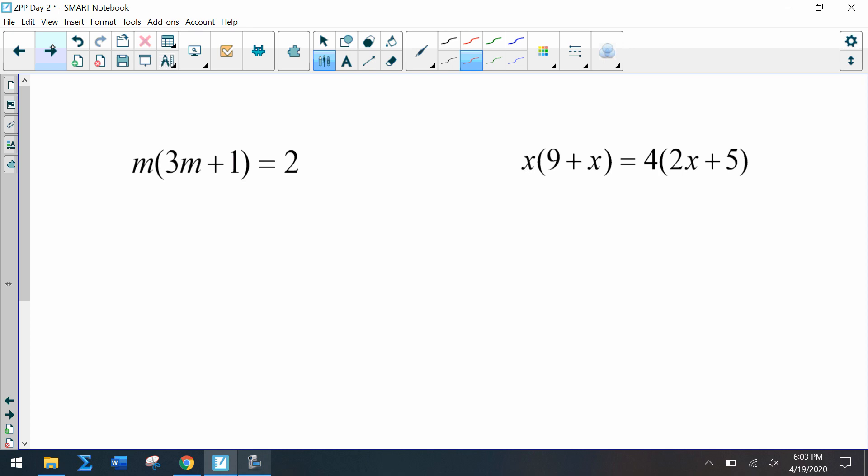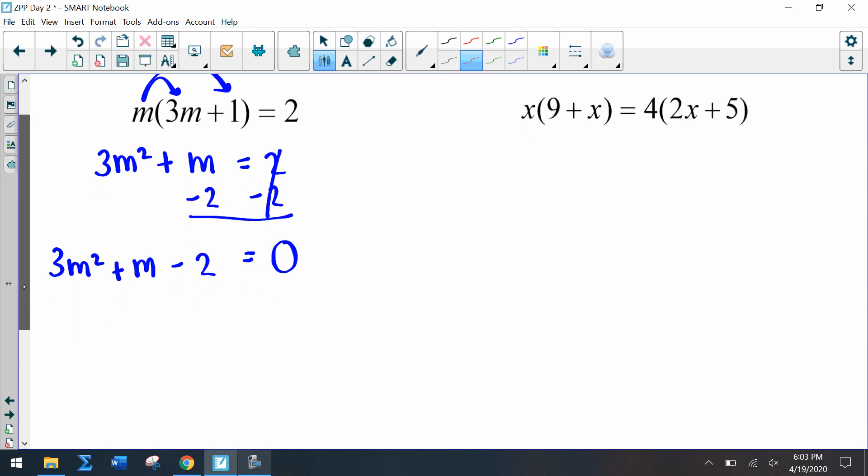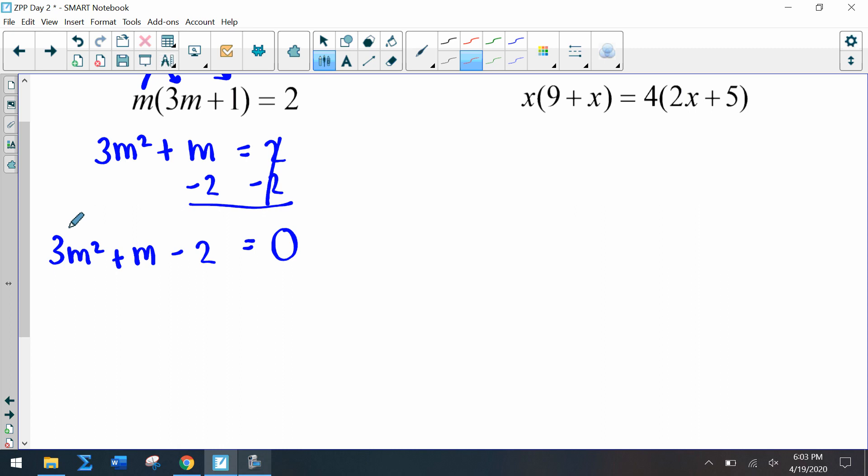Okay, so you can write down these two problems. Neither of them are in standard form. So if we look at the first problem, I have to distribute, so I'm going to do that first. So I have 3m² + m = 2, so still not in standard form and set equal to zero. So we'll take away 2 on both sides, so I have 3m² + m - 2 = 0.